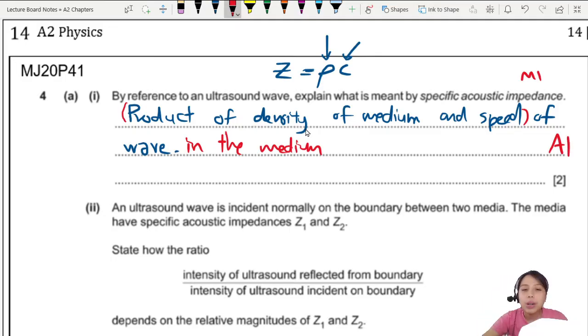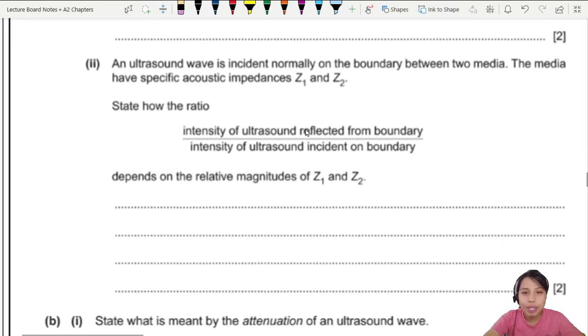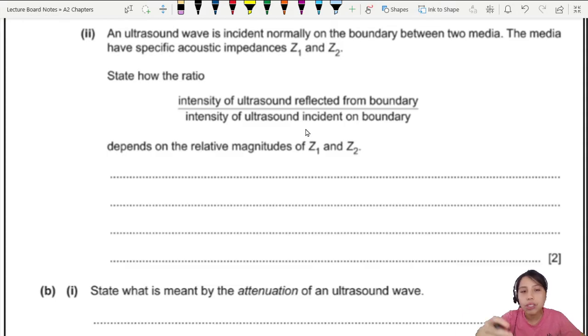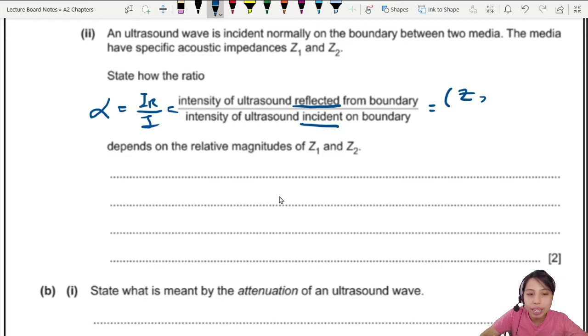Next. Ultrasound wave is incident on the boundary between two media. The media have a specific acoustic impedance Z1, Z2. State how this ratio depends on relative magnitude of Z1 and Z2. This one reminds me of this alpha coefficient, which is IR reflected over the incident wave. Then also there's the equation for it. They didn't give it this time, you gotta remember it. Z2 minus Z1 over Z2 plus Z1.